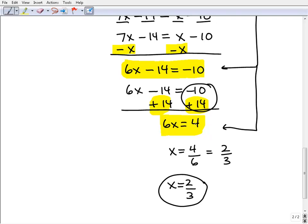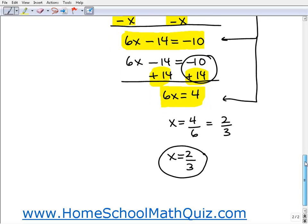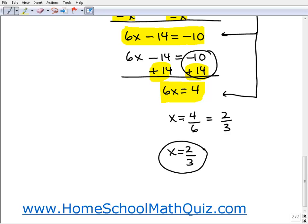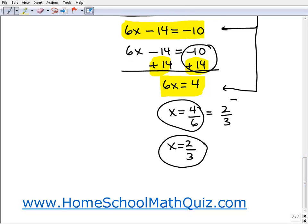So that gives us x equals 4 over 6. Okay, but of course this is a fraction and we always want to write our fractions as nice simplified and reduced fractions, and that would be equal to two-thirds. So this would be the correct answer.